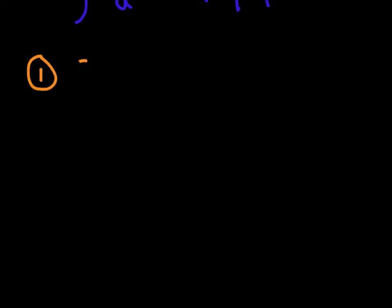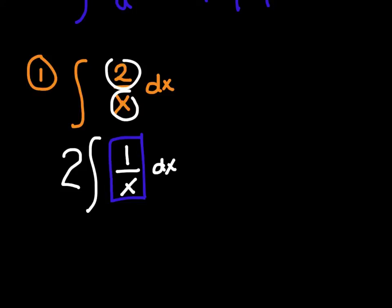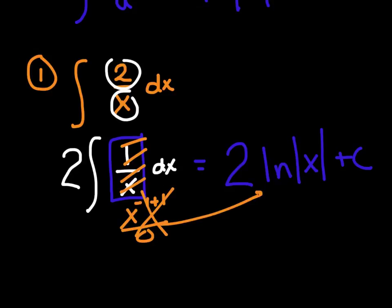Example 1: the integral of 2 over x dx. First, do I have a constant I can pull out? Of course — pull out the 2, and I'm left with 1 over x. Now I ask: am I staring at somebody's derivative? Yes — that's the derivative of ln(x). So this equals 2 ln of the absolute value of x plus c. Alternatively, rewrite as x to the negative 1 and notice adding 1 gives division by 0 — that's your hint you need ln.